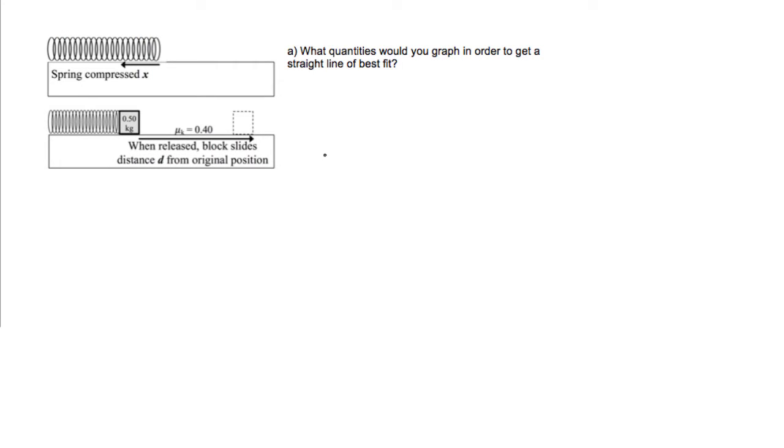First of all, what quantities would we have to graph in order to get a straight line of best fit? Well, in order to figure that out, all we need to do is figure out what our theoretical relationship is. So I've got to use some physics on this before I do any graphing. I've got this spring right over here. It's compressed a distance x right there, and then the block slides a distance d. So what is my basic relationship?